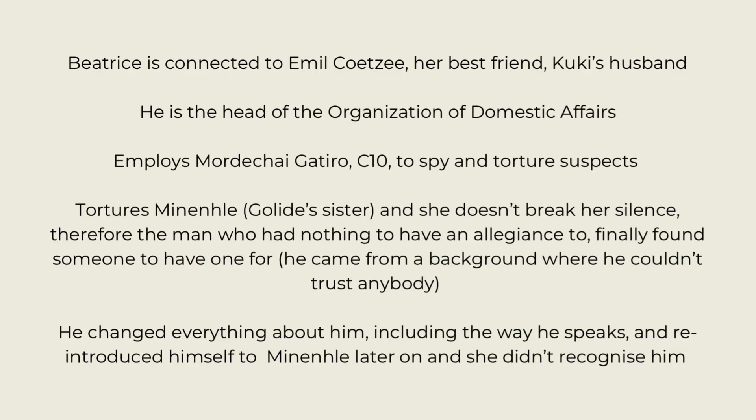Beatrice is connected to Emile Kutsia, her best friend Cookie's husband. He is also the head of the Organisation of Domestic Affairs. He employs Mordecai, also known as C-10, to spy on and torture suspects. One day, he is ordered to torture Menentle, Golida's sister, and she doesn't break her silence.